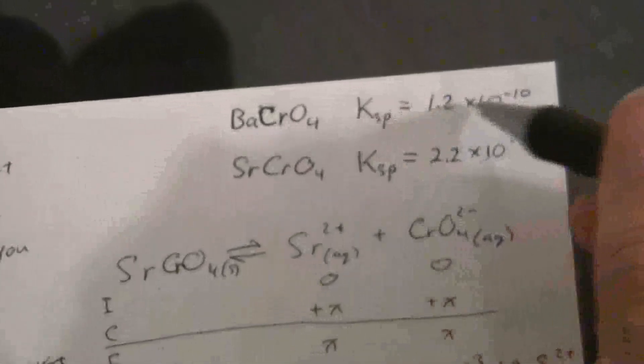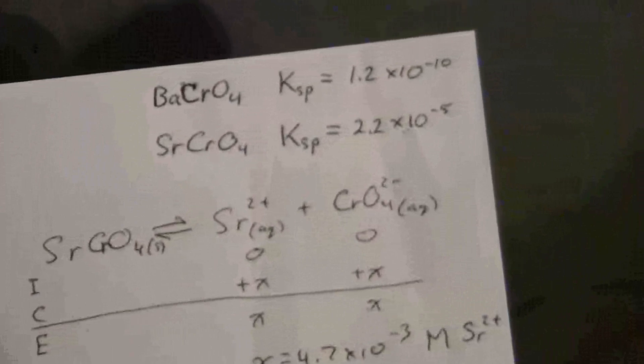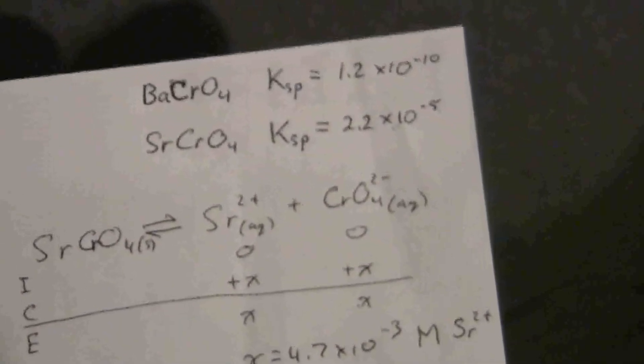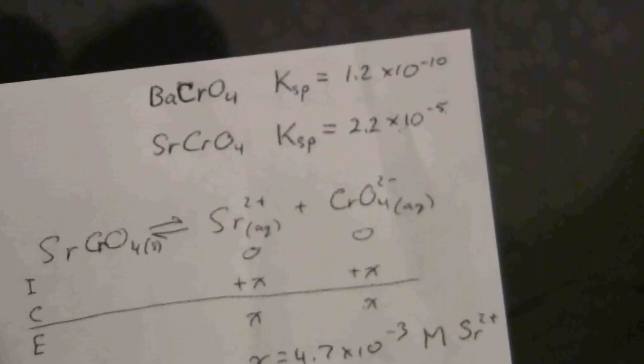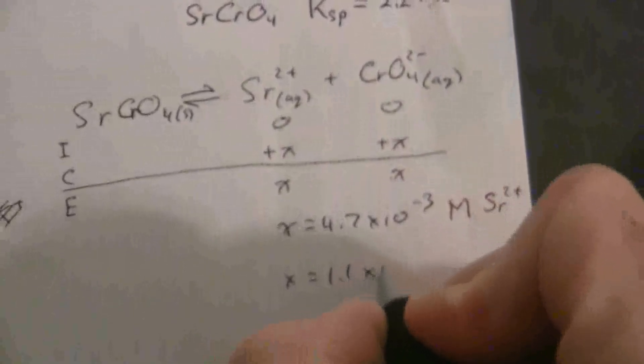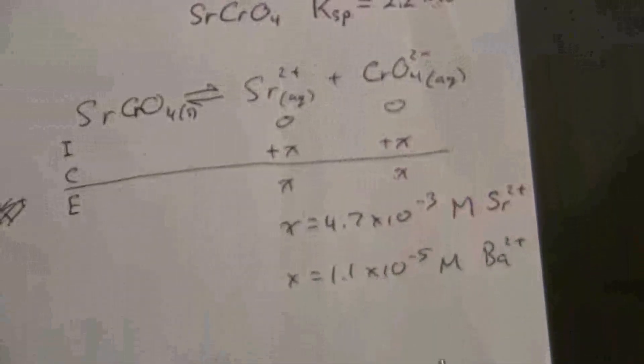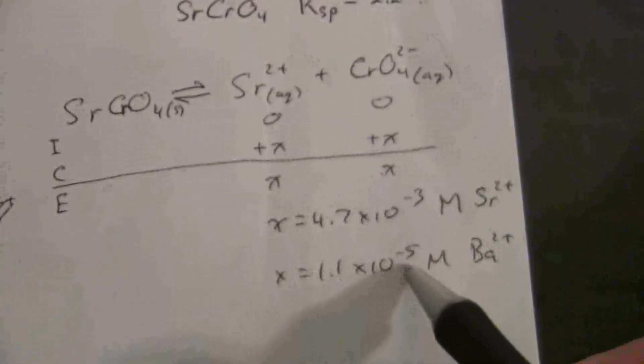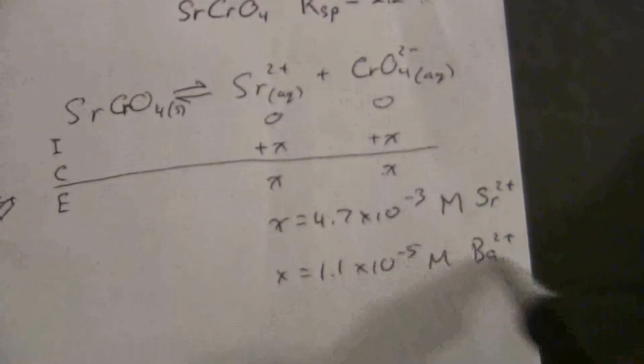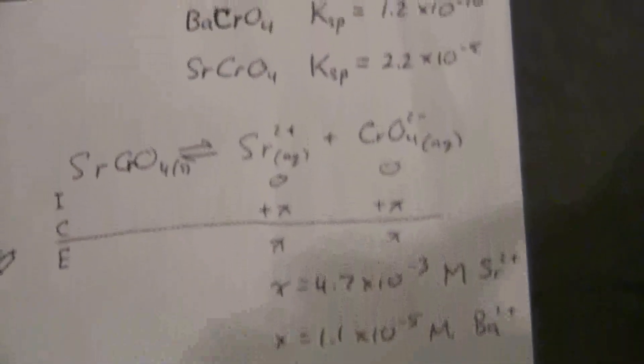We do the same thing for the barium chromate. We can take the square root of that value, and we have the square root of 1.2 times 10 to the minus 10, is 1.1 times 10 to the minus 5. That's how much of the barium ions. So you can see fewer barium ions, the lower concentration of barium ions in the solution than the strontium.